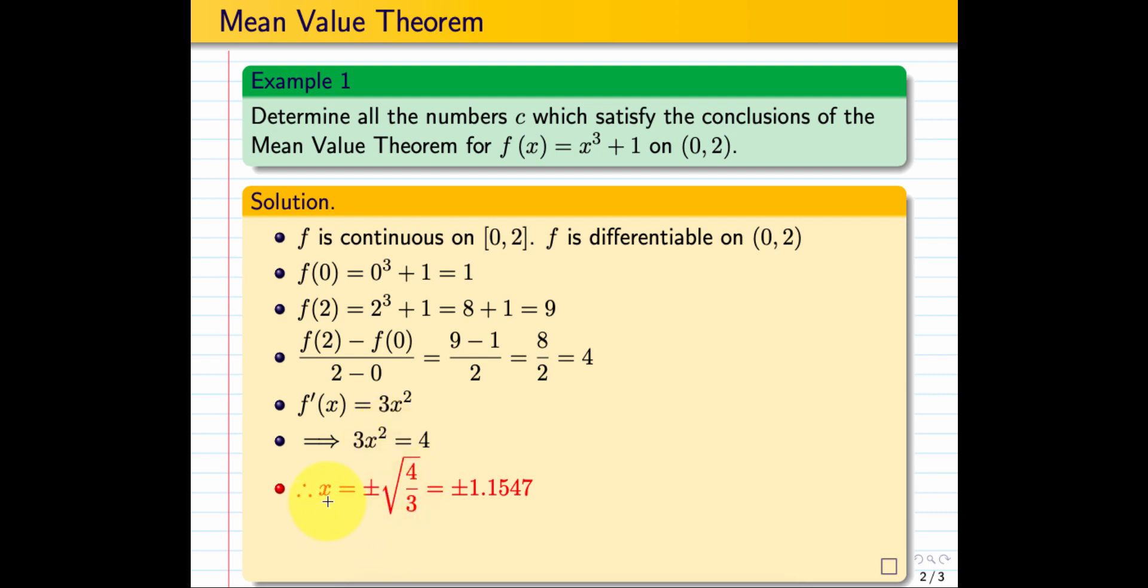We need to find a value of x in the interval (0, 2). The only x that is in the interval (0, 2) is the positive 1.1547. So we only have one positive solution.